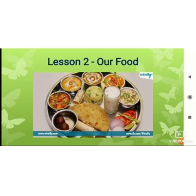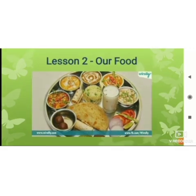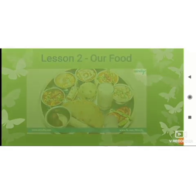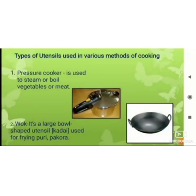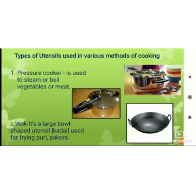Now in this session we are going to learn more about different utensils and appliances used for cooking food. There are different types of utensils for cooking food. The first one is the pressure cooker, which is used to steam or boil vegetables or meat.